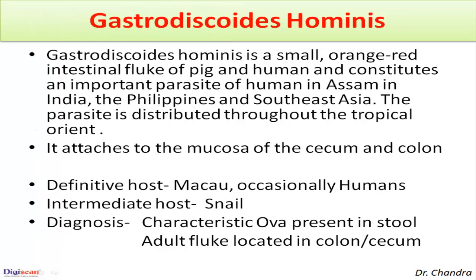To know more about Gastrodiscoides hominis: it is a small orange-red intestinal fluke of pig and human, and constitutes an important parasite of humans in Assam, India, the Philippines, and Southeast Asia. The parasite is distributed throughout the tropical orient and attaches to the mucosa of the cecum and colon.